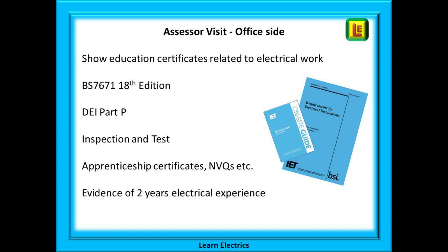Dealing with the office side first: you need to demonstrate that you are a professional business. You may be a one-man outfit, but be organized — have the relevant paperwork properly filed and to hand. Give the assessor the confidence that you are in control of your paperwork. There was nothing more frustrating to me as an assessor than having a new member go searching upstairs for insurance certificates, into the kitchen for the calibration certificate, and on a long search in the van for installation certificates. Get everything together — it will impress the assessor.